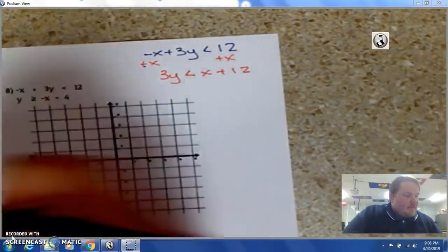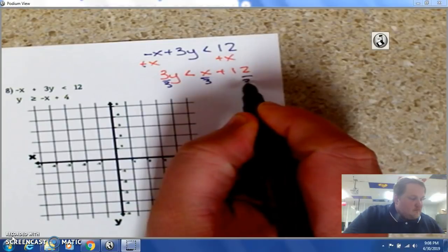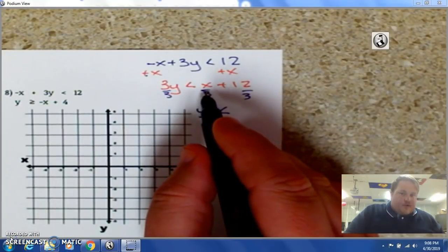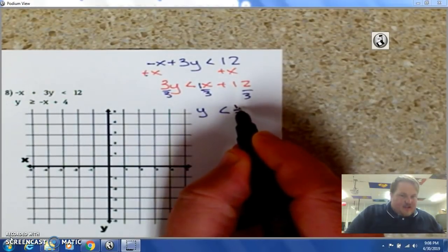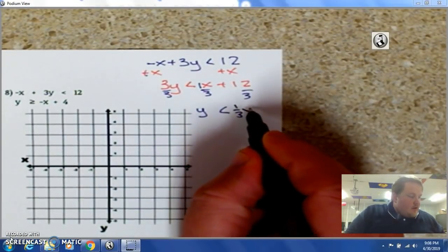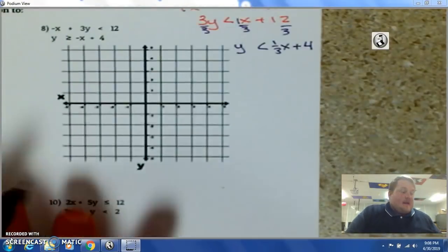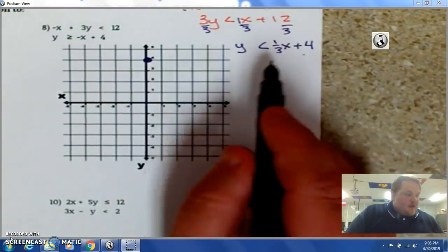And, I get 3y is less than x plus 12. And, I divide by 3 on each side. And, I'm going to get y is less than one-third x plus 4. It's my y-intercept.